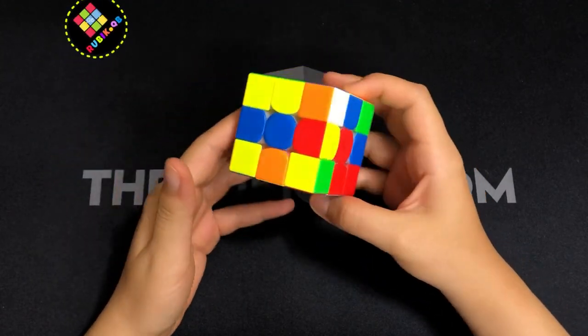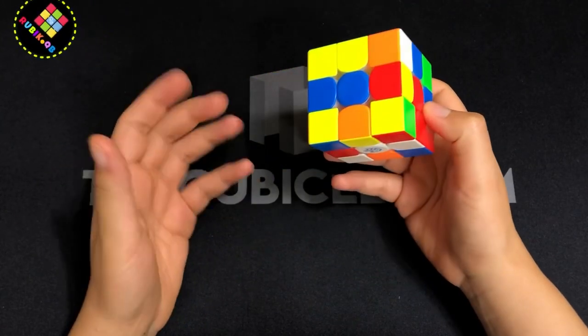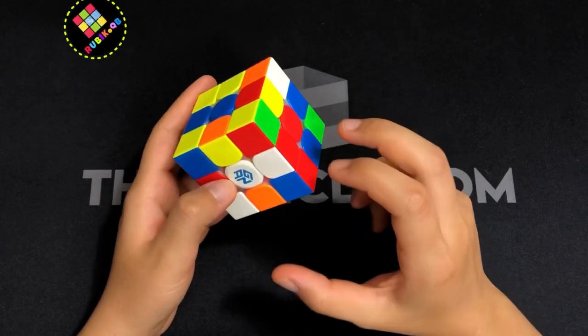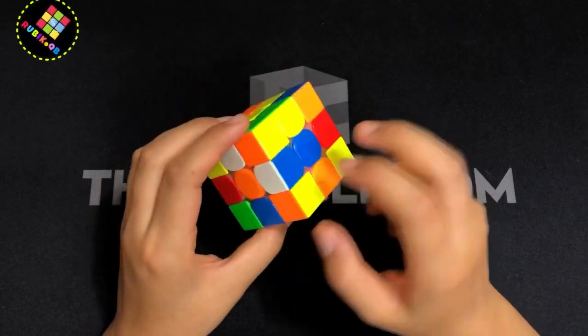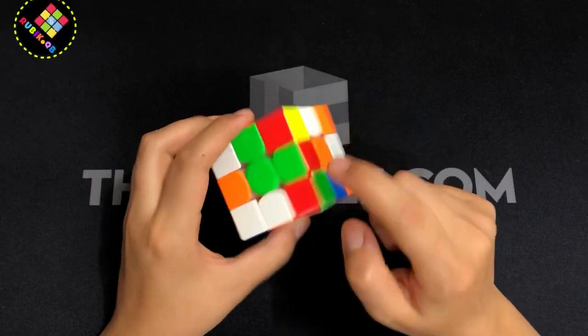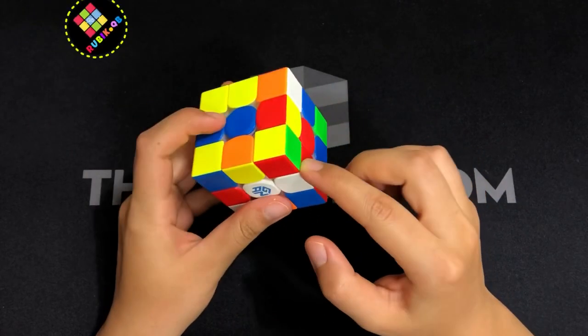Alright, the cross looks pretty easy but the way he solved it makes it look easier. So this one is already solved, this one only needs one move but these two are not as good as these two cross edges.